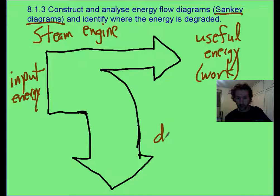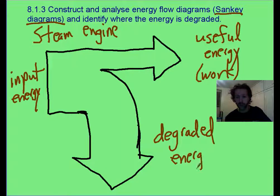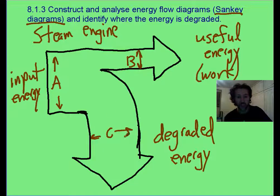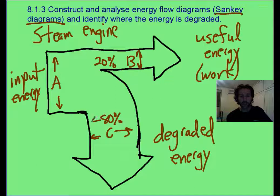What's branching off down here, that is not useful for work. That is your degraded energy. Maybe you can just heat your hands up with it and keep from freezing to death. And let's say this has a width of A. Maybe this has a width of B. And this has a width of C. The widths are representative of percentages of energy. So maybe this is 20% of the energy is useful, and maybe 80% is not. So, width-wise, A is going to equal B plus C.